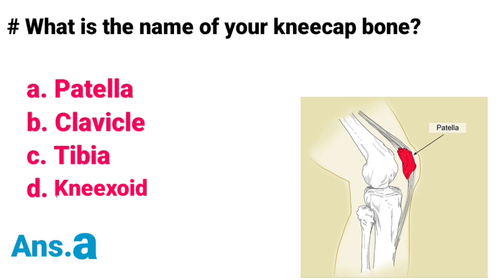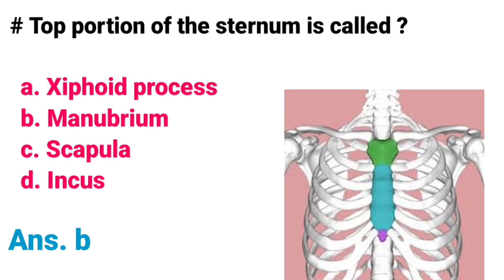What is the name of your kneecap bone? A) Patella, B) Clavicle, C) Tibia, D) Navoid. Correct answer is option A, Patella. The patella, also known as the kneecap bone, is a flat rounded triangular bone which articulates with the femur and covers and protects the anterior articular surface of the knee joint.